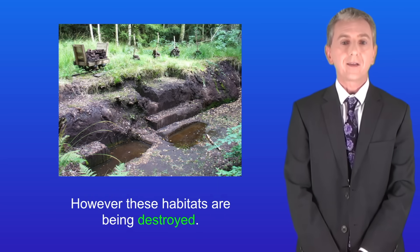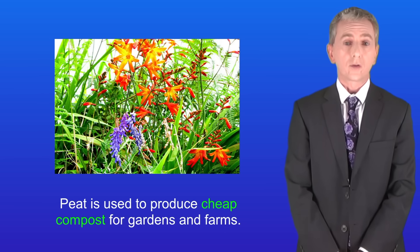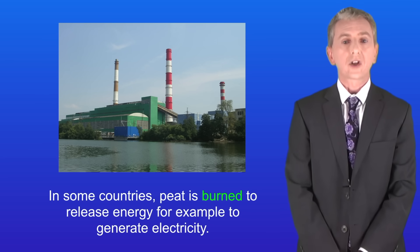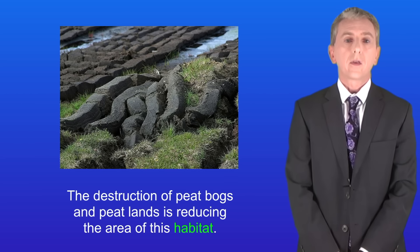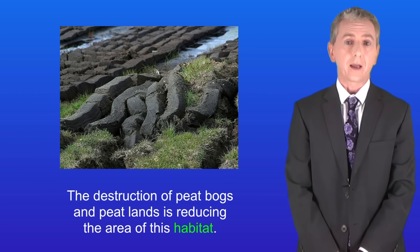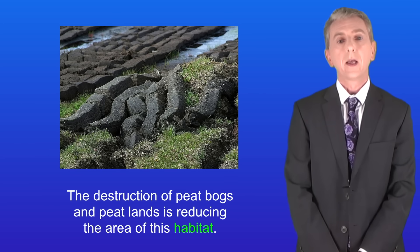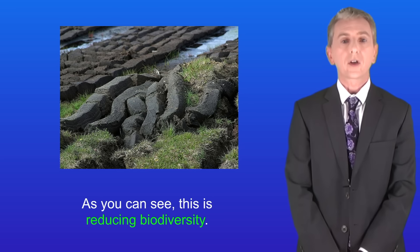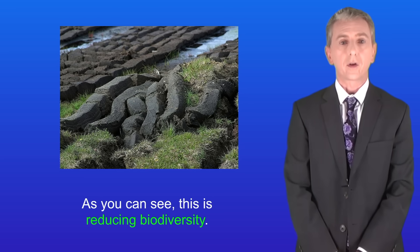However, these habitats are being destroyed. Peat is used to produce cheap compost for gardens and farms, and in some countries peat is burned to release energy, for example to generate electricity. The destruction of peat bogs and peatlands is reducing the area of this habitat, reducing the variety of animals, plants and microorganisms that live there, and so this is reducing biodiversity.